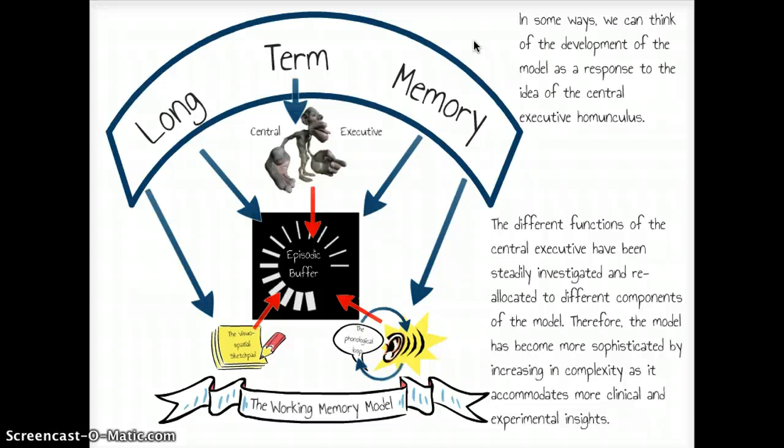The model's become more sophisticated and increased in complexity as it accommodates more clinical and experimental insights. That's why it's good science. It gets more complicated as it needs to, not more complicated at the start. As Einstein said, an idea should be as complex as it needs to be, but no more complex than that.